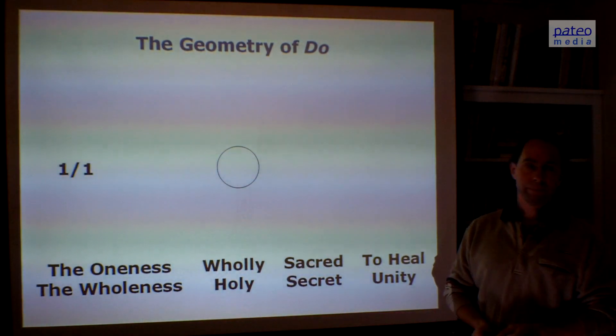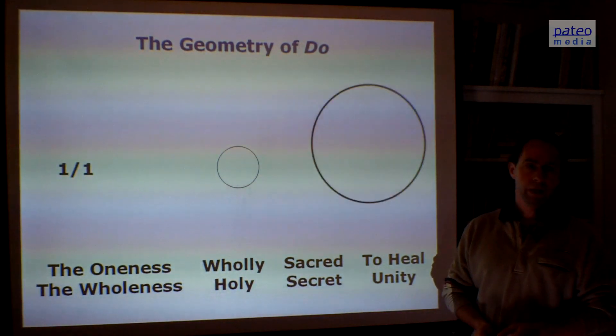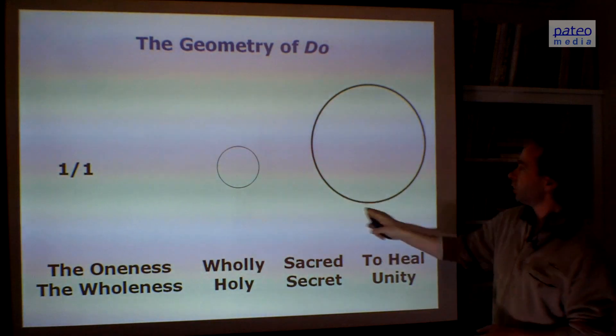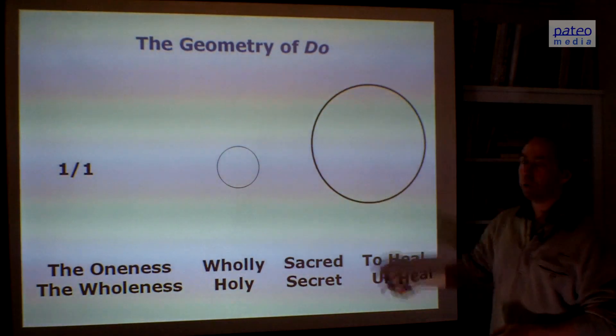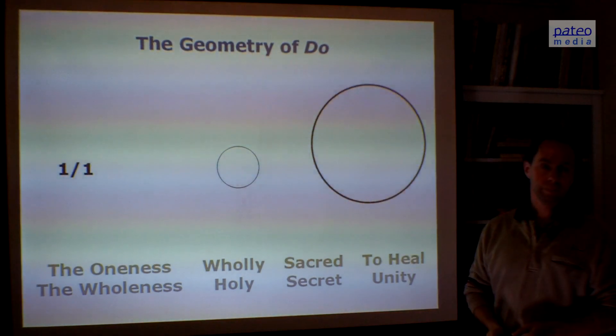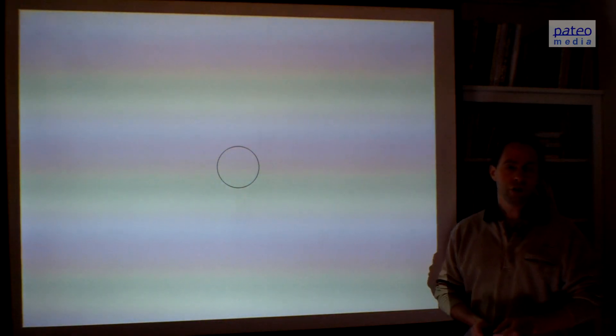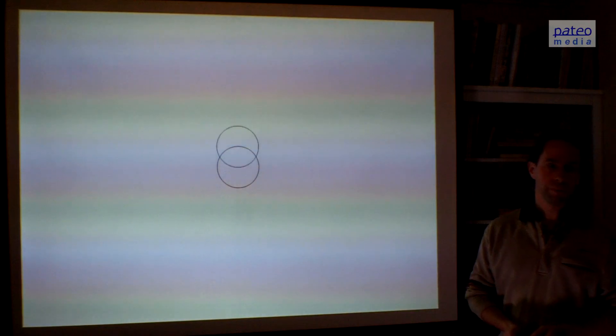It is one over one. And of course, I represent it with a big circle. That was the geometry of Doe. Now we add another circle.